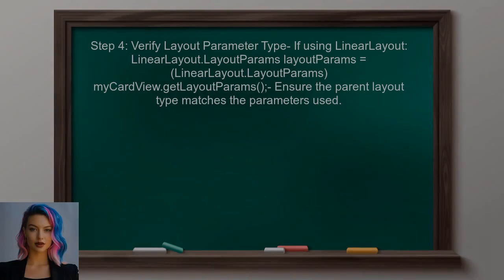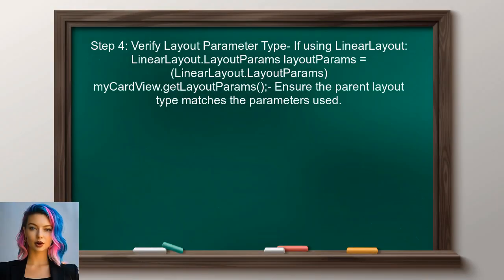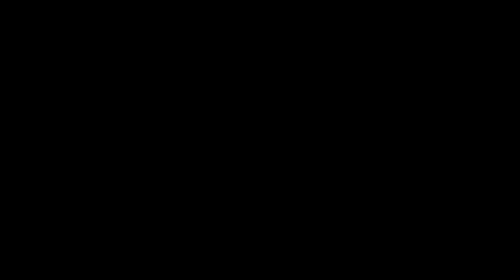If the user continues to encounter a class cast exception, they should verify the type of the parent layout. The layout parameters must match the parent layout type. For example, if the card view is inside a LinearLayout, use LinearLayout.LayoutParams.